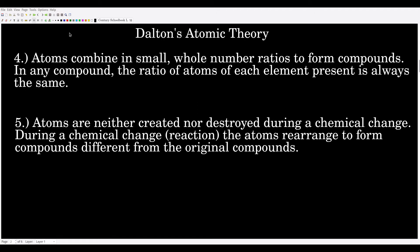Fourth, atoms combine in small whole number ratios to form compounds. In any compound, the ratio of atoms of each element present is always the same. Because you can't break apart an atom and still have that type of element, when atoms combine to make compounds, they do so in small whole number ratios. For example, water is H₂O — two atoms of hydrogen for one atom of oxygen, a two-to-one ratio.